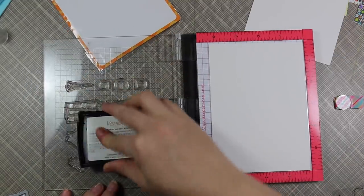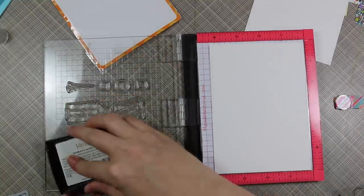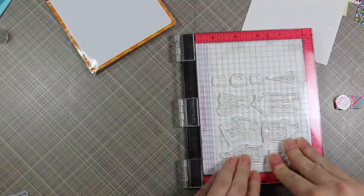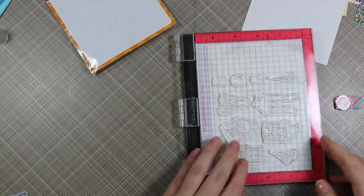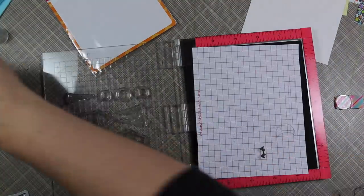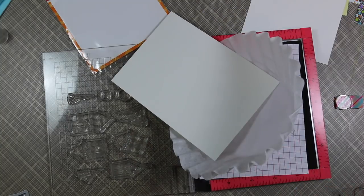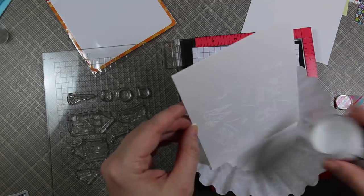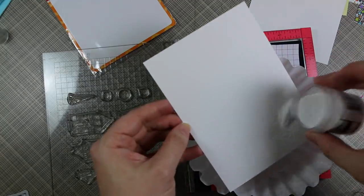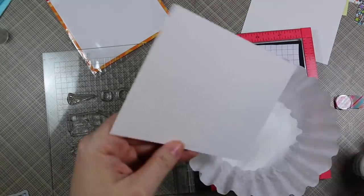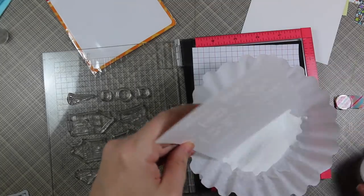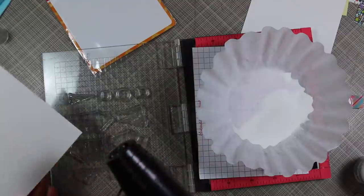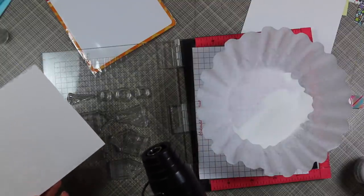I used some antistatic powder on the watercolor paper so that I can ink these images up with Versa Mark ink, which is just a clear sticky slow-drying ink. Then I closed the lid of my Misti and I've got all the images stamped at once. Then I can use my Ranger super fine detail white embossing powder. I chose this embossing powder because these images are so finely detailed and so small. I wanted the finest embossing powder I had because even my detail embossing powder isn't quite as fine as this.